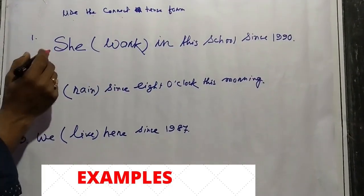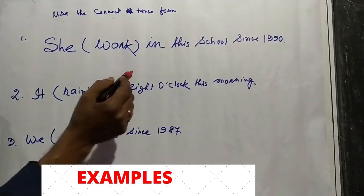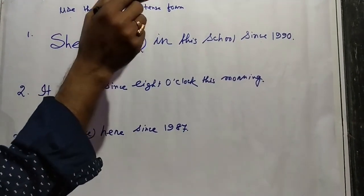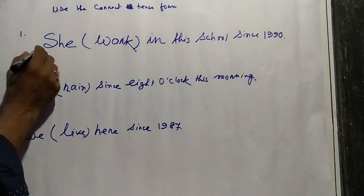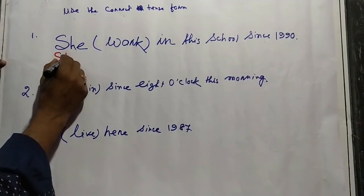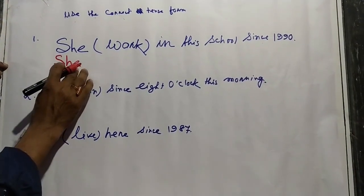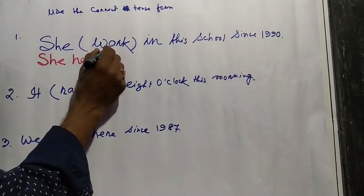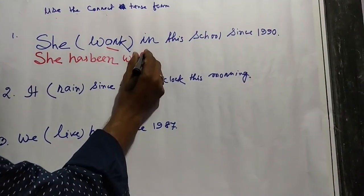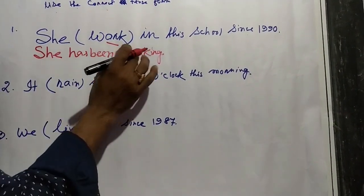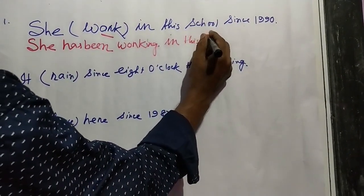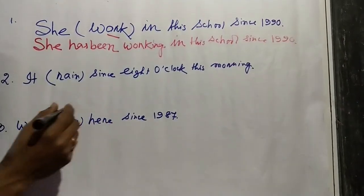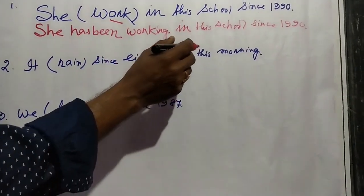Now let us use the correct tense form. 'She work in this school since 1990.' This action began in 1990 and is still going on, so it belongs to present perfect continuous tense. The subject 'she' is third person singular, so we put 'has been' and add '-ing': 'She has been working in this school since 1990.'